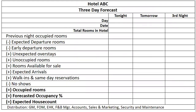The format of a 3-day forecast provides forecasted information including — shown in bold — occupied rooms, occupancy percentage, and house count. It is calculated starting from previous night's occupied rooms, minus expected departure rooms, minus early departure rooms, plus unexpected overstays, plus unoccupied rooms, which gives rooms available for sale. Then expected arrivals for the day are added, along with walk-ins and same-day reservations, and minus no-shows gives the occupied rooms, forecasted occupancy, and expected house count.